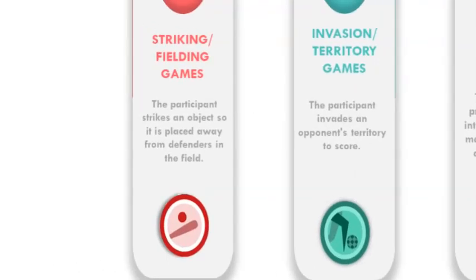Then we have striking or fielding games: game forms in which one team can score points when a player strikes a ball or similar object and runs to a designated playing area, while the other team attempts to retrieve the ball and return it to prevent the opponents from scoring.